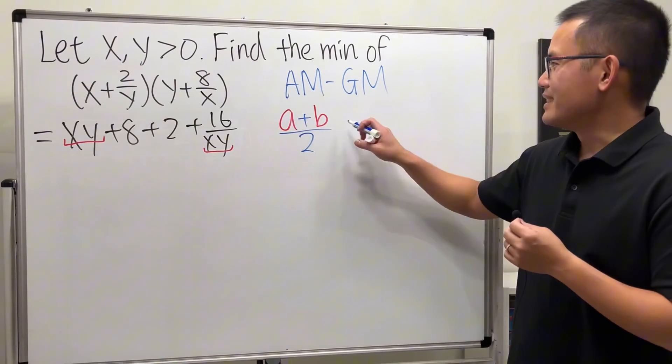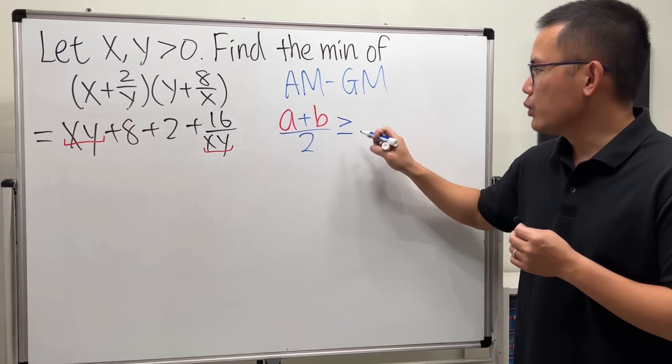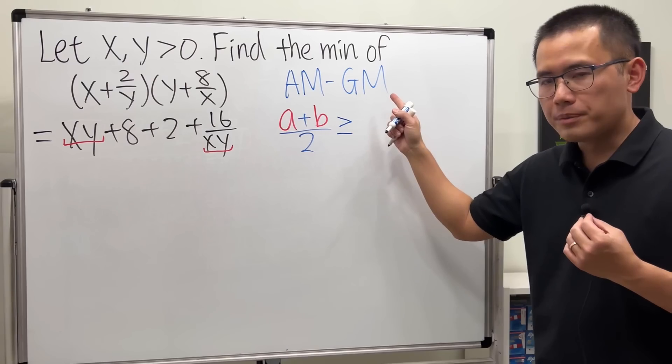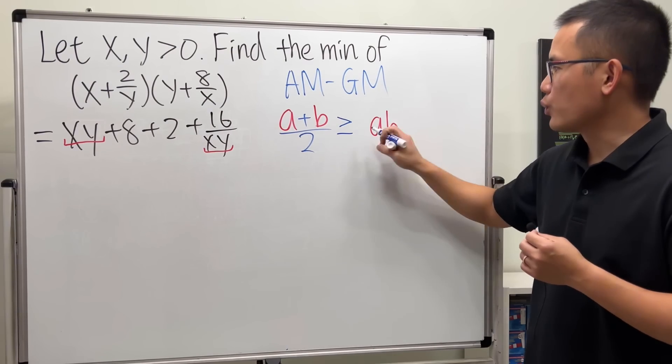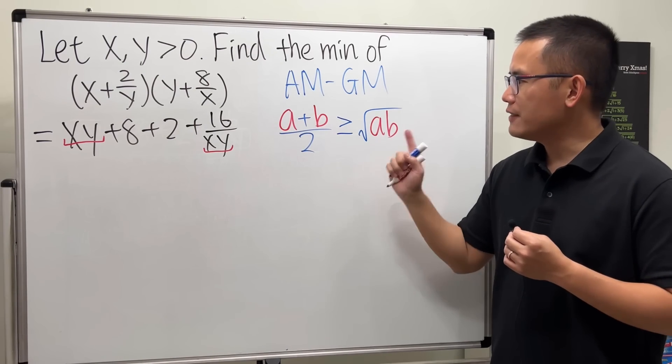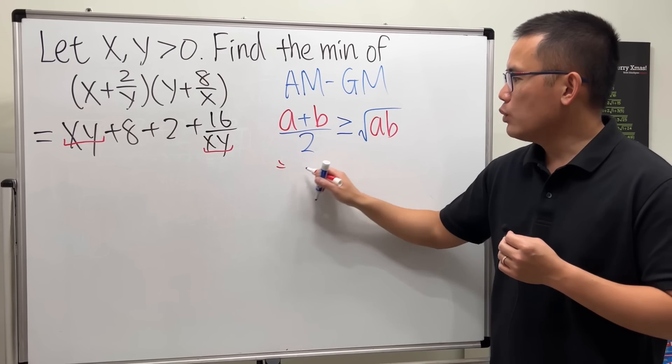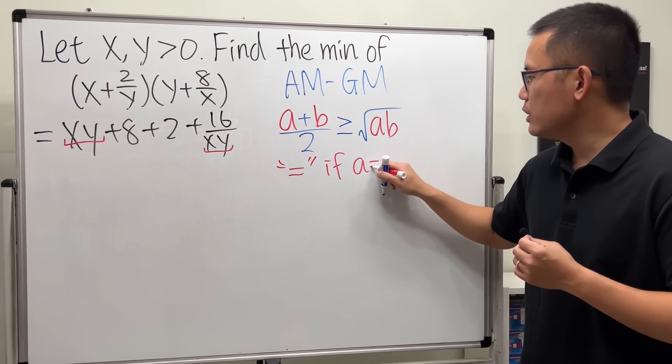Anyways, this arithmetic mean will be greater than or equal to—for the geometric mean, we are going to multiply a and b and then take the square root. This will always be true, and in fact they will be equal if a is equal to b.